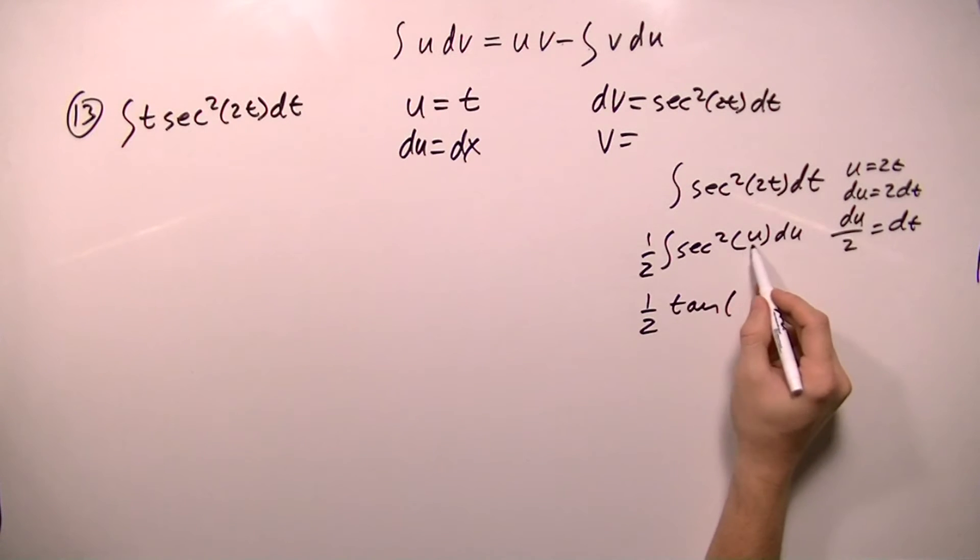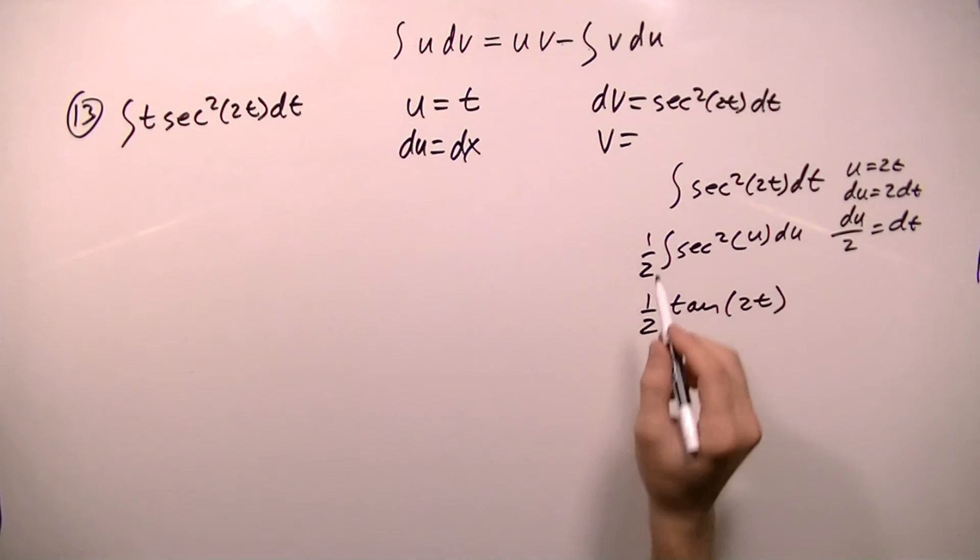And I know that the integral of secant squared u is tangent. So I'm going to get tangent, but instead of u, I'm going to plug back in my 2t. So my v equals tangent 2t over 2.